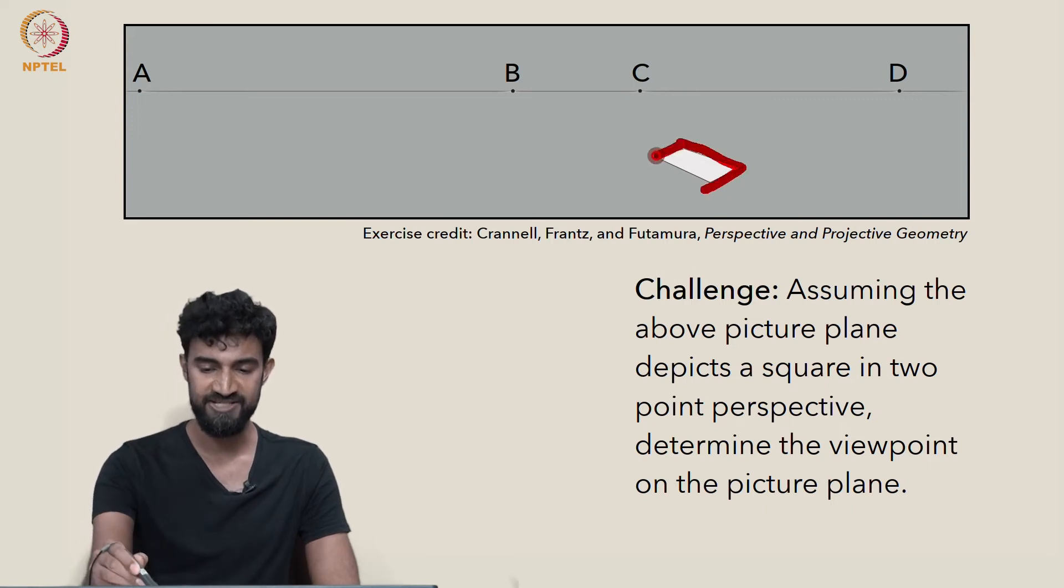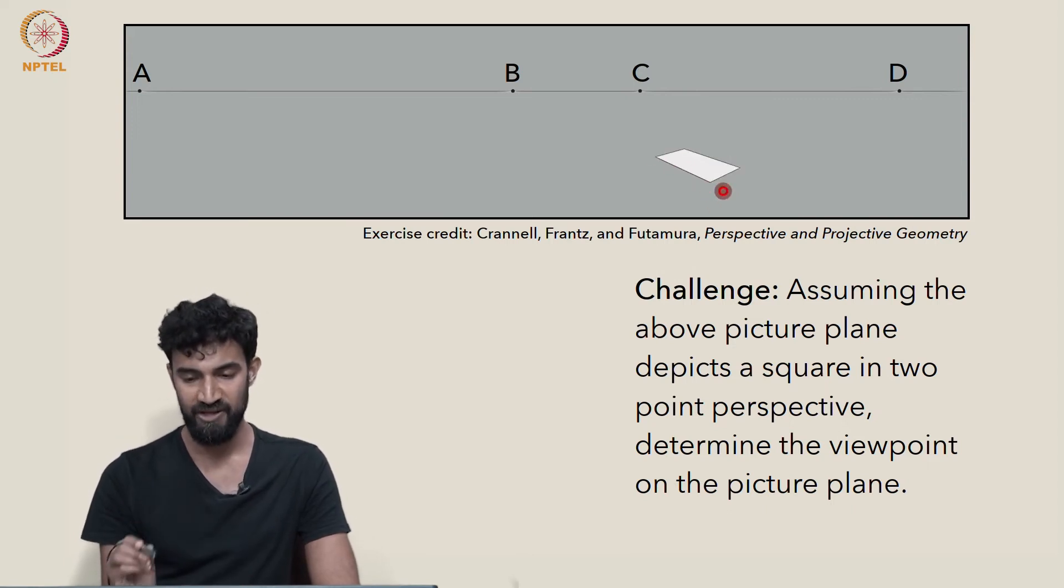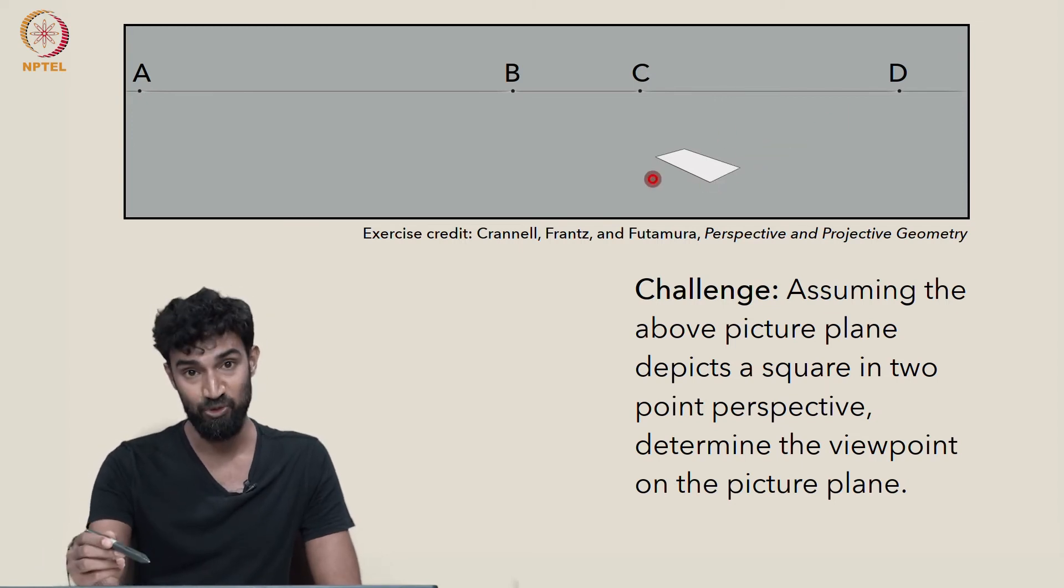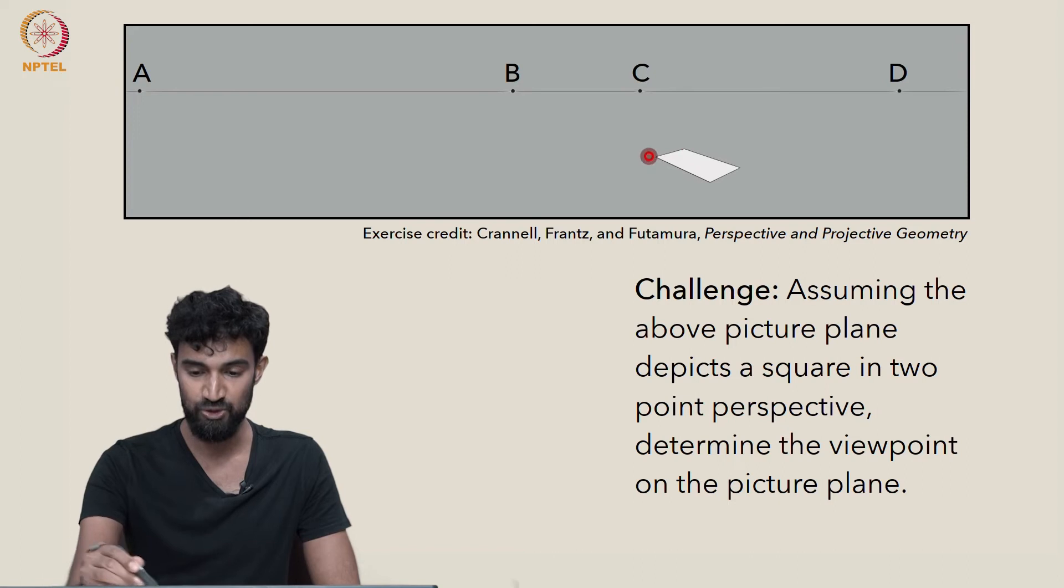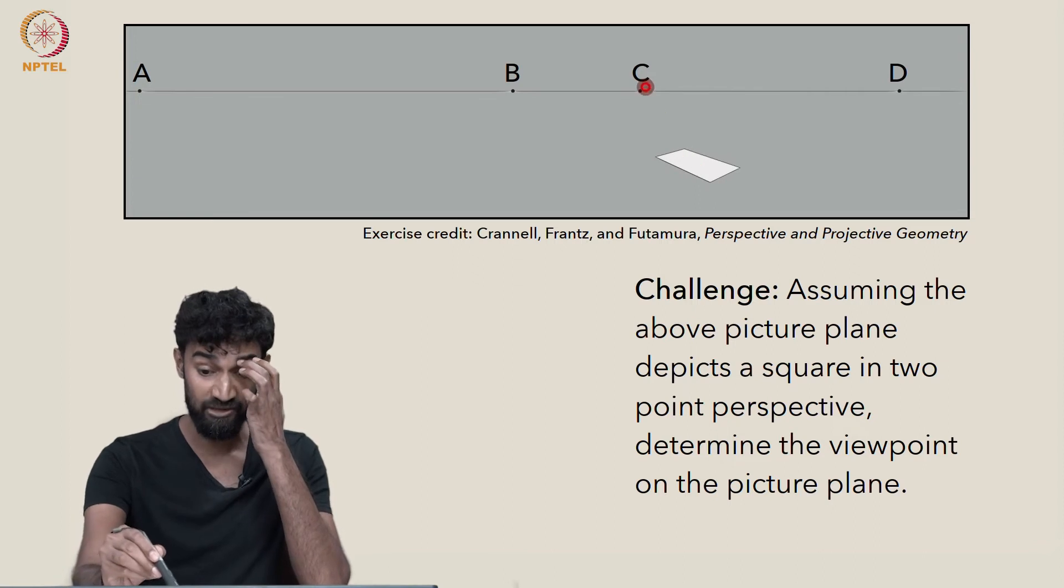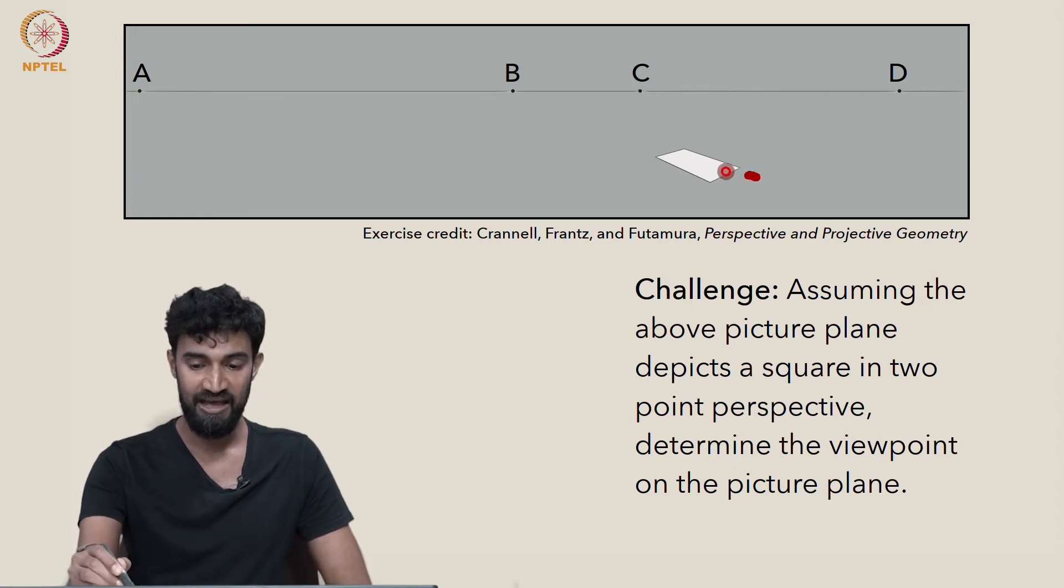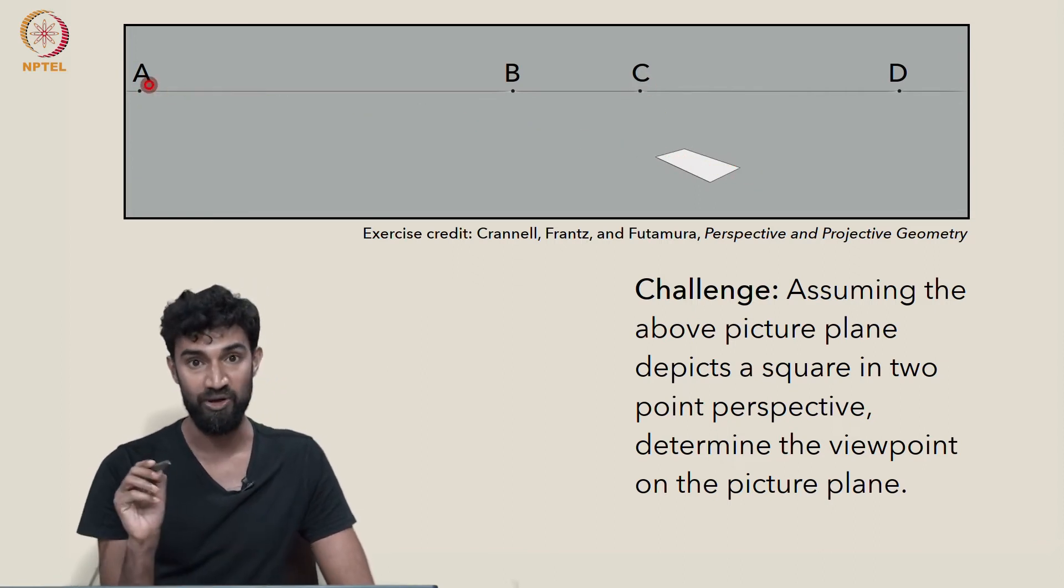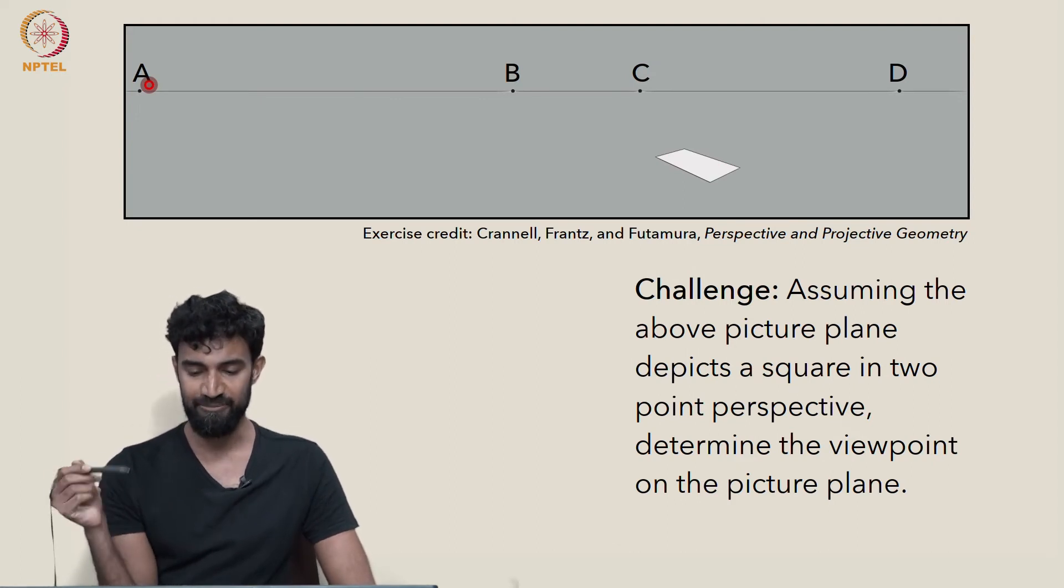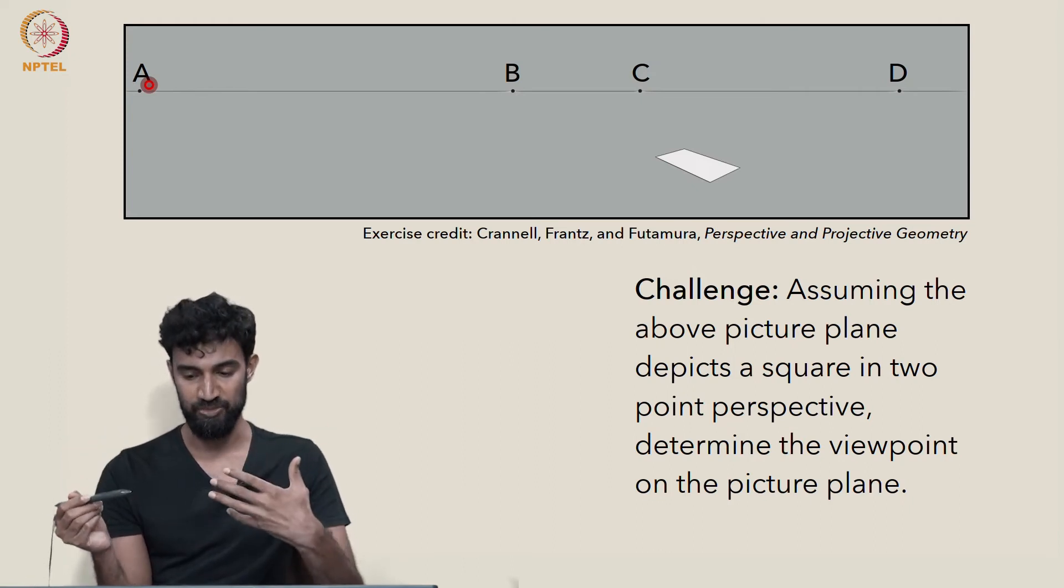So assuming this is an honest square in real life, then in this perspective view, we have four vanishing points associated to it. First, these two edges go to the point D, these two edges go to the point B, this diagonal goes to the point C, and this diagonal goes to the point A.